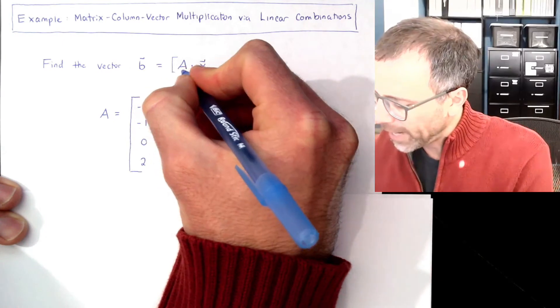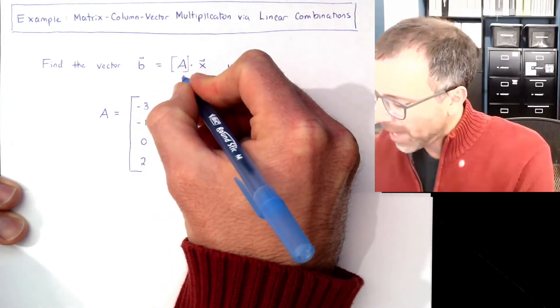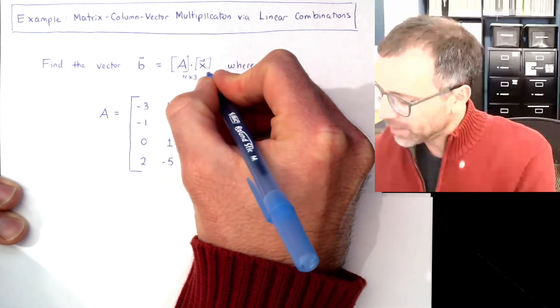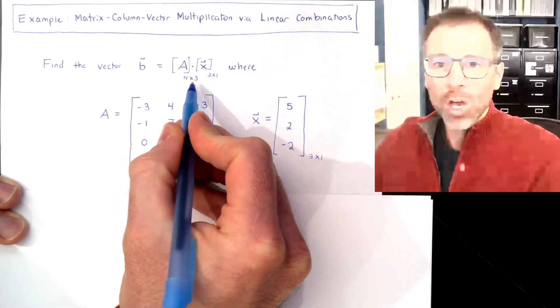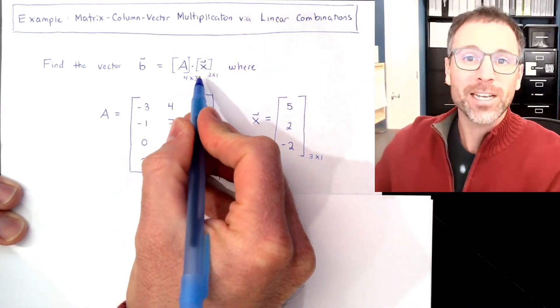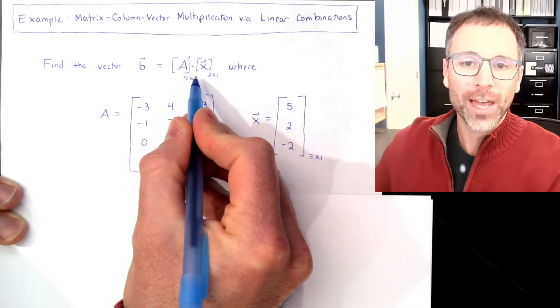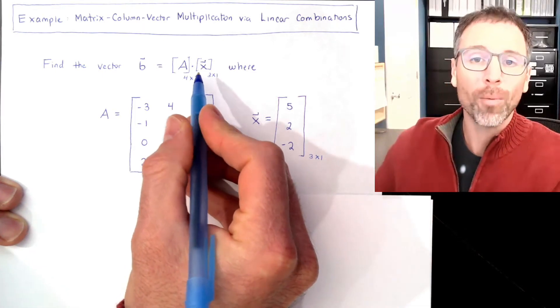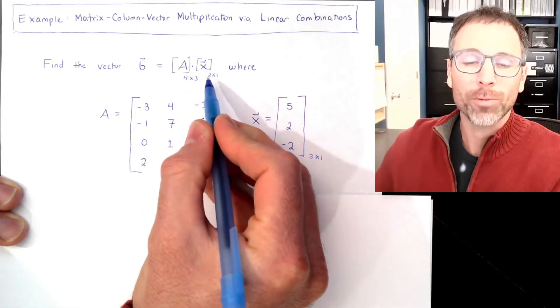We'll do our quick analysis, which is a habit. A is a 4 by 3, x is a 3 by 1. The inner dimensions must agree. So the inner dimension, the column dimension of A, matches the row dimension of x. So these are conformable by matrix multiplication, matrix-vector multiplication.